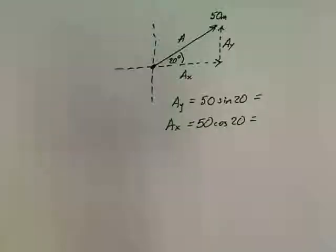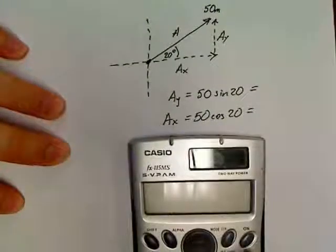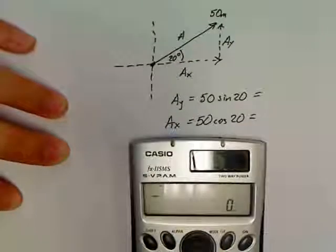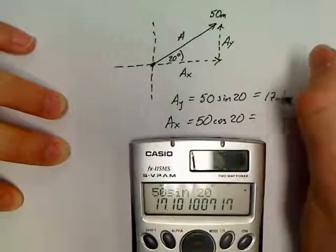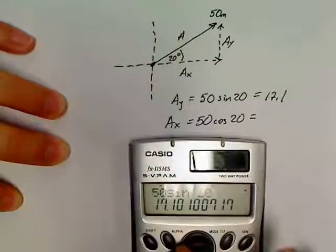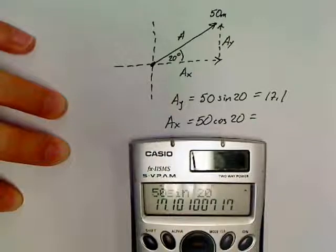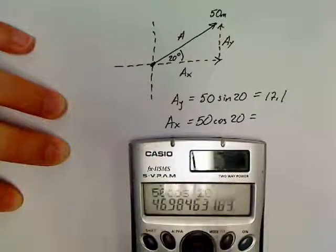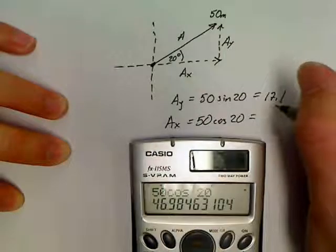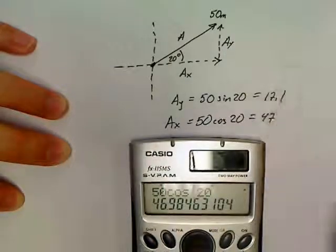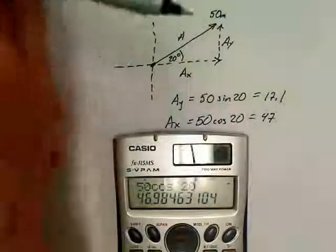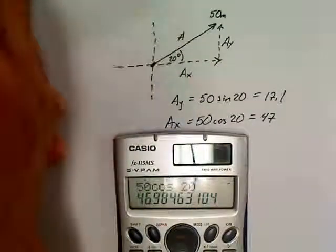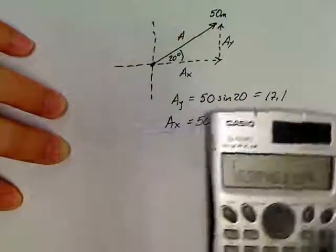I don't know why I didn't pick 30. So, we've got 50 sine of 20, which is 17.1. And then we can change that to a cosine and we've got 46.9, so basically 47. Now, notation. I'll make a separate video on how to do that type of notation.